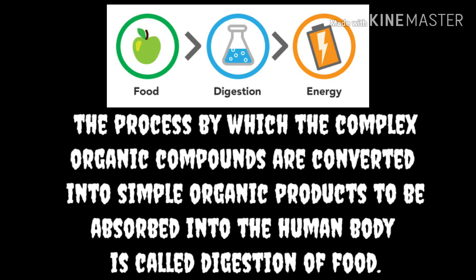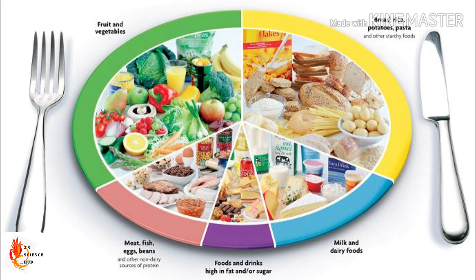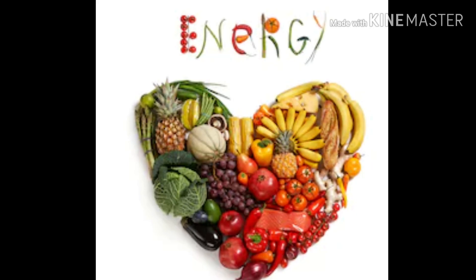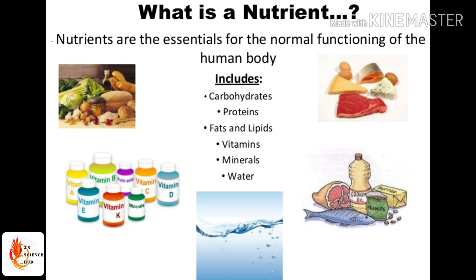So the process by which complex organic compounds are converted into simple organic products which can be absorbed into the human body is called digestion of food. In the first unit of Grade 10, we studied about different biomolecules.